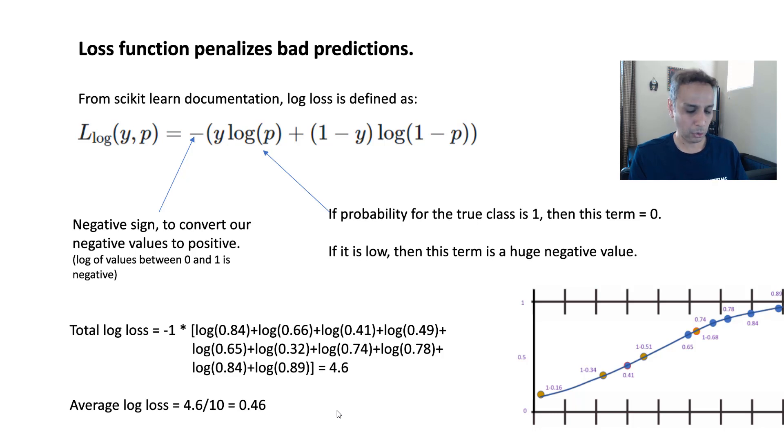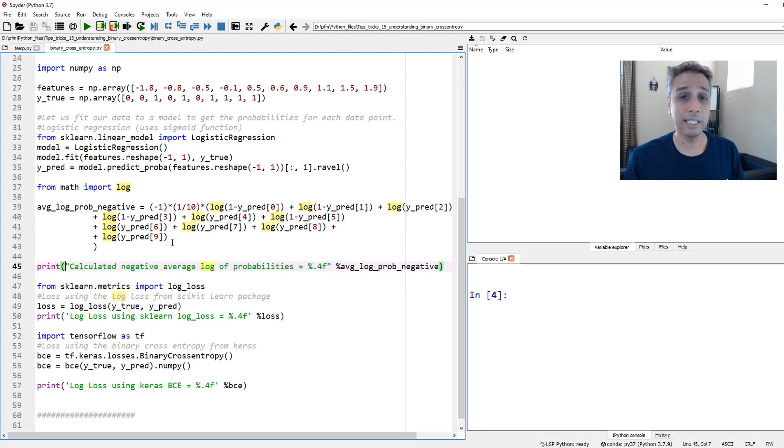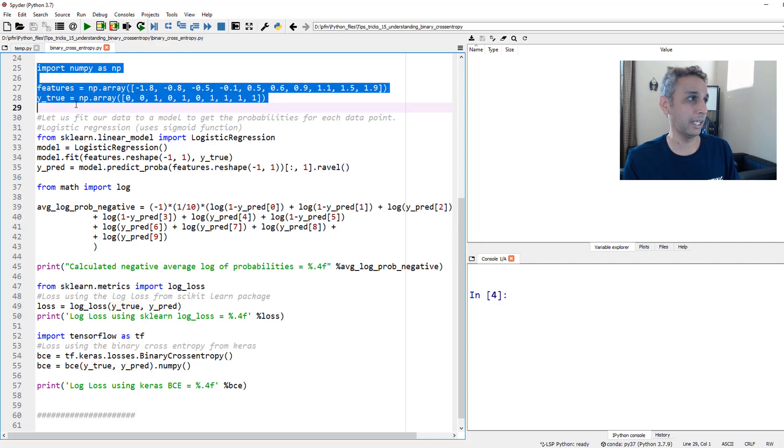This is a cat, the first data point, which means 1 minus p, 1 minus 0.16. That's exactly what we're doing here, which is 0.84. So log 0.84 plus log of 1 minus 0.34. Again, a cat. And then log of 0.41, because that's a dog in reality. You keep adding that, and then you get a value of 4.6 when you add all of these. How many data points do we have? 10. So the average loss is 0.46. If you plug these values into a binary cross entropy equation, you would get 0.46.